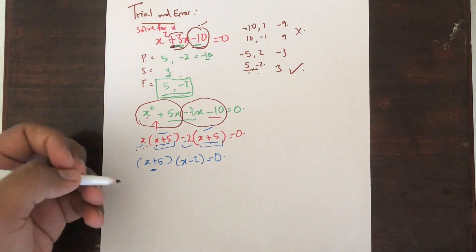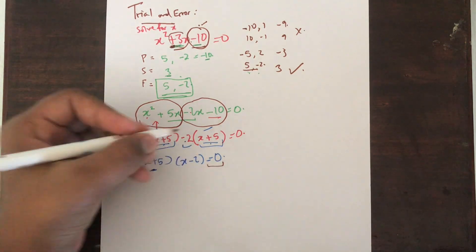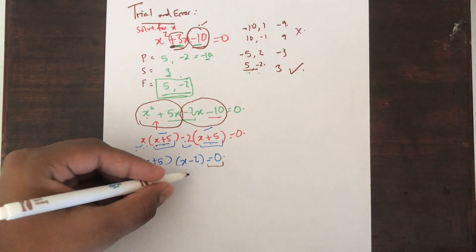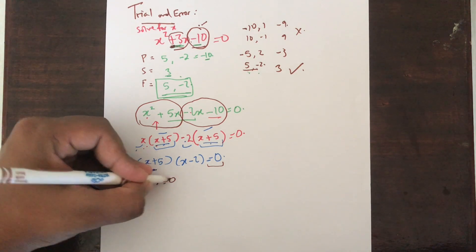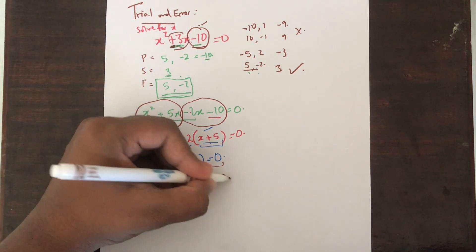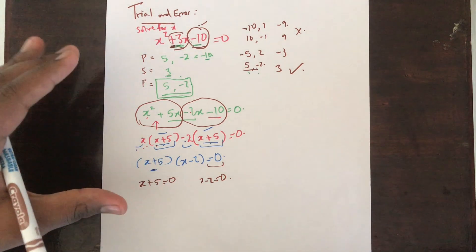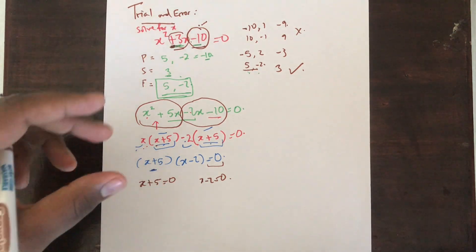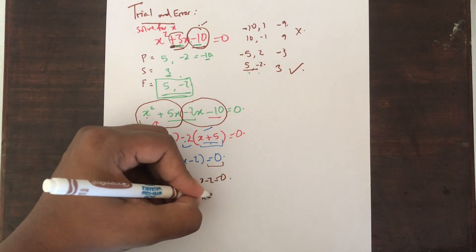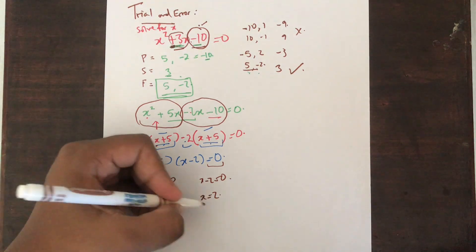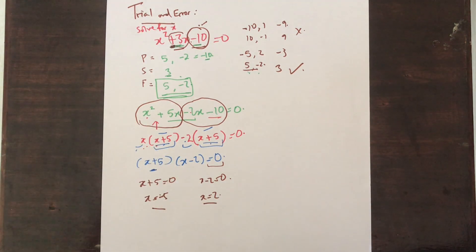Another thing to remember: when you have a quadratic equation equal to 0 and you have factorized it, you can equate each bracket to 0. So x plus 5 equals 0, and x minus 2 equals 0. From here, x equals minus 5 and x equals 2. So these are the solutions for our quadratic equation through the use of the trial and error method.